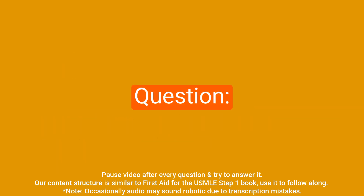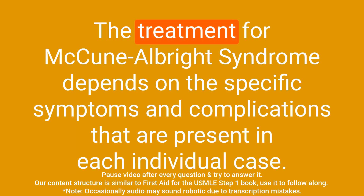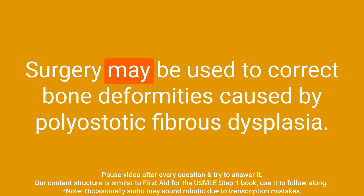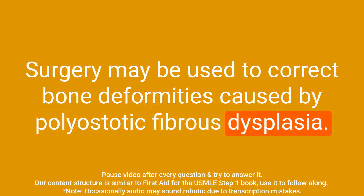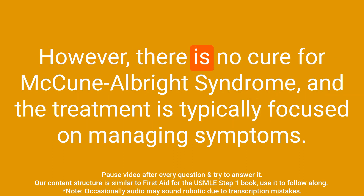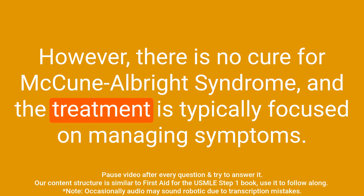Question: What is the treatment for McCune-Albright syndrome? Answer: The treatment depends on the specific symptoms and complications present in each individual case. Surgery may be used to correct bone deformities caused by polyostotic fibrous dysplasia. Hormone therapy may be used to control endocrinopathies such as precocious puberty. However, there is no cure, and treatment is typically focused on managing symptoms.